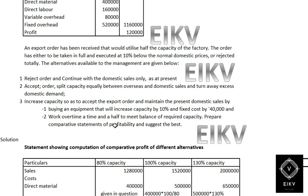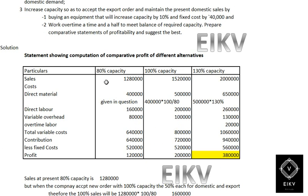Prepare the comparative statement of the capacity as suggested above. For the solution, we have a table containing 3 columns: one is 80% capacity which is the present level; 100% capacity which means 50% for the export order and 50% for the domestic order; and 130% capacity which has 80% for the present domestic order and 50% for the export order.